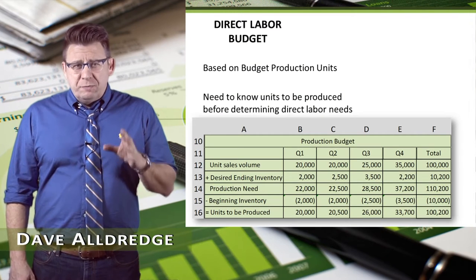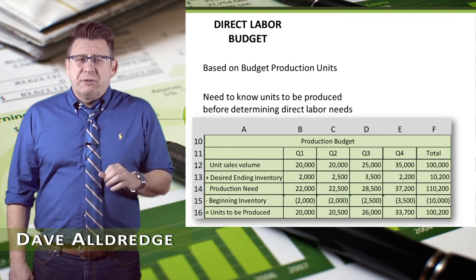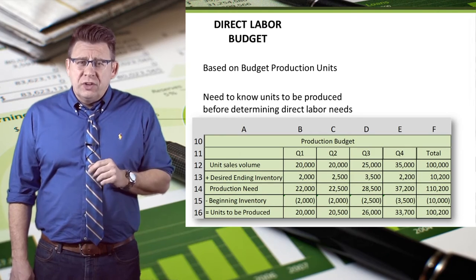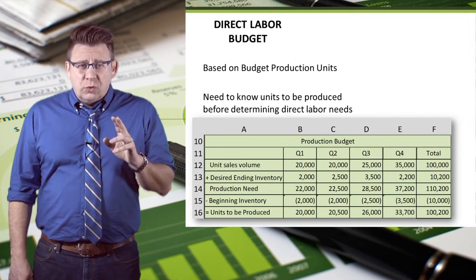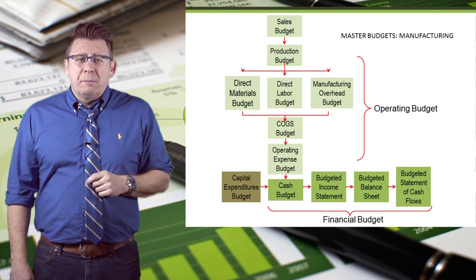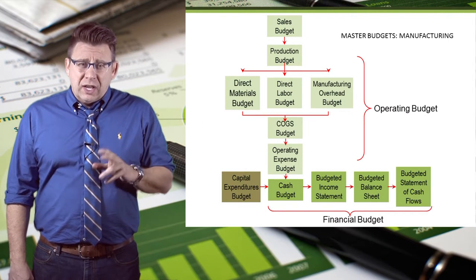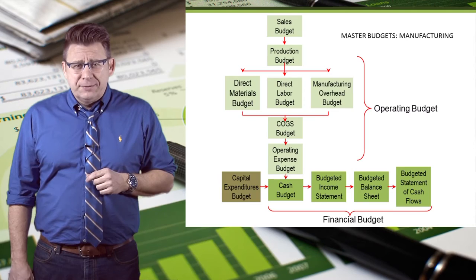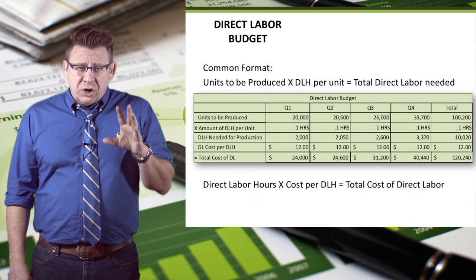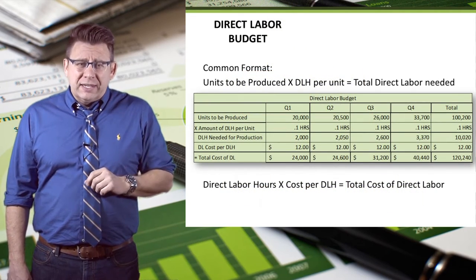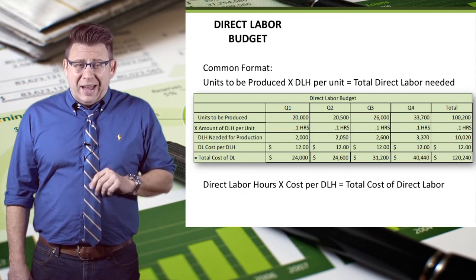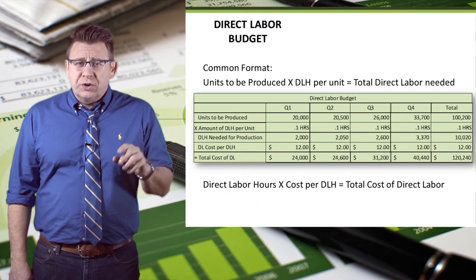The direct labor budget is based on data from the production budget. We need to know how many units are going to be produced before we know how much direct labor will be needed. You can see that the direct labor budget is the fourth budget completed in the master budget process. The common format to determine the amount of direct labor needed is to multiply the units to be produced by the direct labor hours per unit.